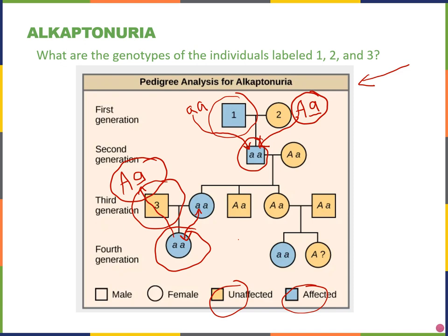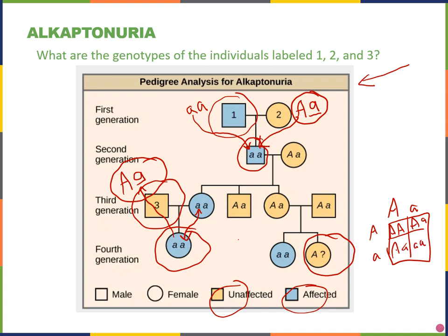There's also a question mark for one child not part of the original question. That child is unaffected, so small a, small a is out of the question. We could do a Punnett square — the parents are big A small a crossed with big A small a — giving big A big A, big A small a, big A small a, small a small a. Since this child is not affected, they have a two-thirds chance of being a carrier and a one-third chance of being homozygous dominant.